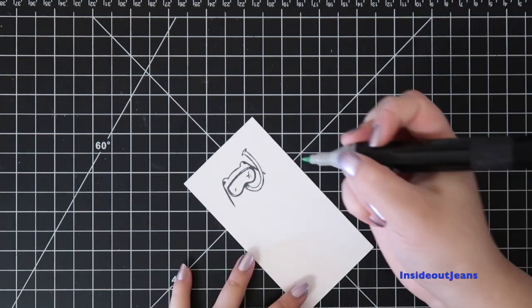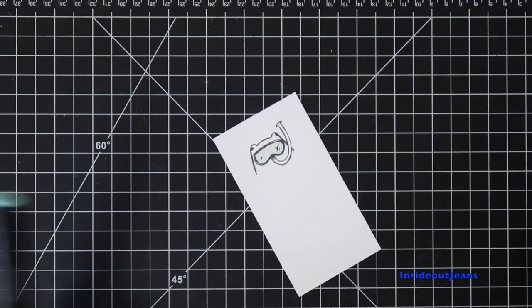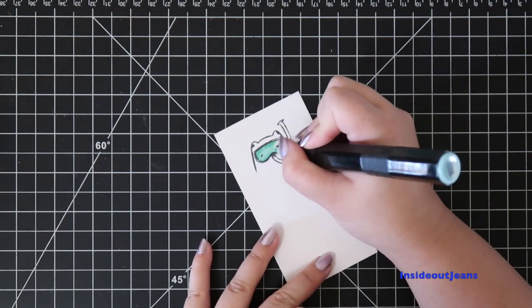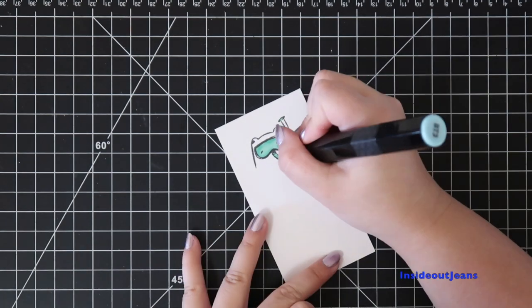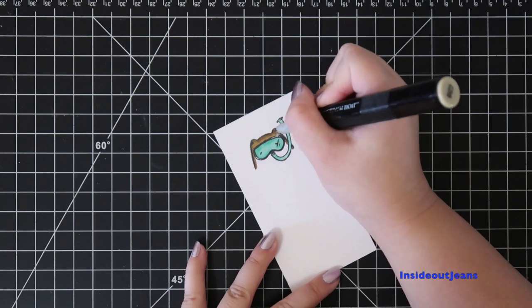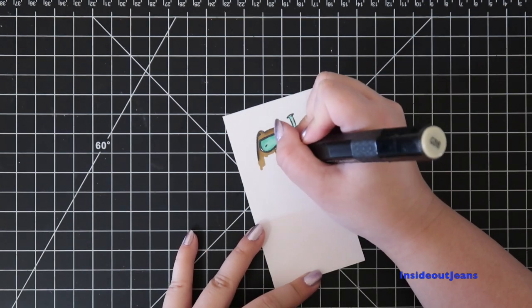I'll go ahead and color it up using Spectrum Noir markers. I wanted to keep a color palette of the ocean, so I use turquoise blue for the scuba gear and the bear itself will be brown. All the colors that I'm using will be listed down below.